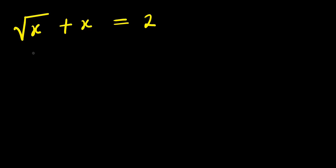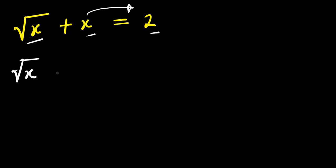Hello, how to solve this radical problem? This is square root of x plus x equals 2, and we are solving for our values of x. So what we are going to do is simply move x over here to get square root of x equals 2 minus x.